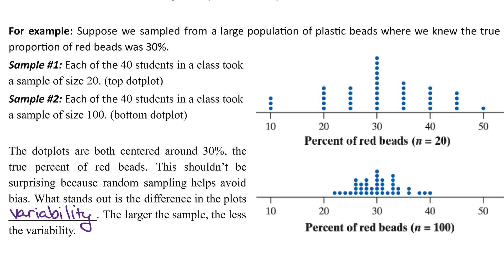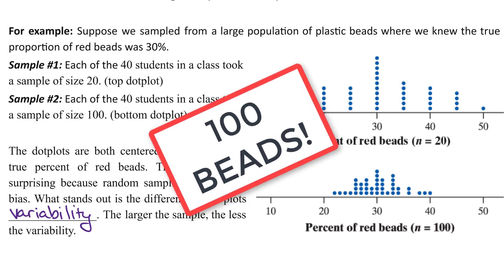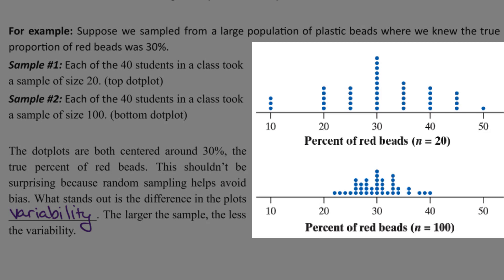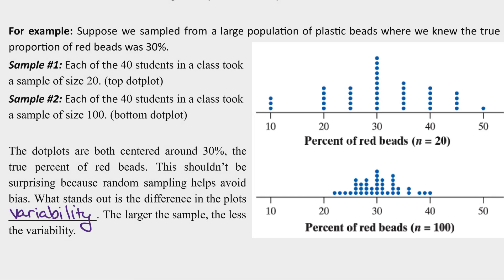For a second sample, instead of taking 20 beads, we repeat the same process but take samples of size 100. We have two dot plots to the right — there are 40 dots on each, and each dot represents one student sample. The placement of the dot corresponds with the percent of red beads in that sample. We can see that both dot plots are centered around 30, the true percent of red beads. But looking at the second dot plot for sample size 100, there's much less variability. With a larger sample size, we get a decrease in the variability of our distribution.